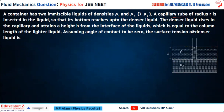A capillary tube of radius R is inserted in the liquid so that its bottom reaches up to the denser liquid. So the bottom part is in the denser liquid, and the denser liquid rises in the capillary.